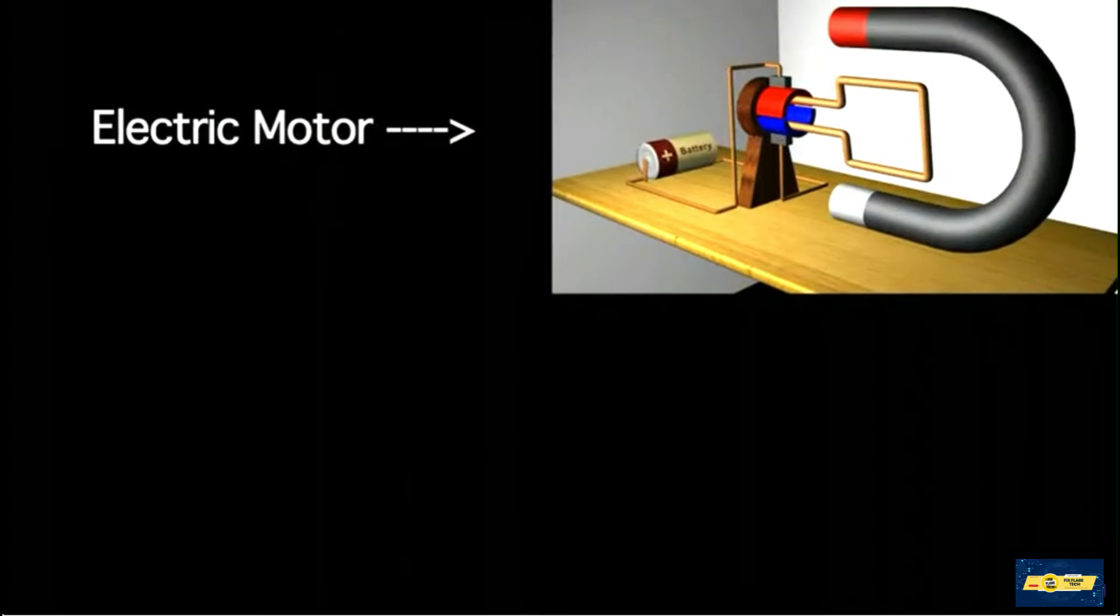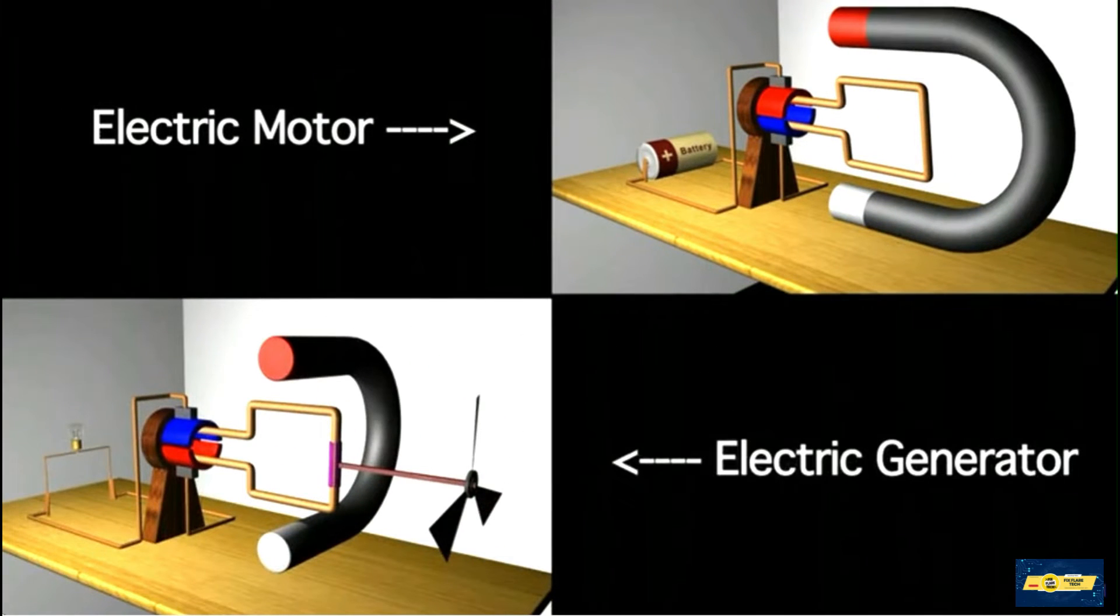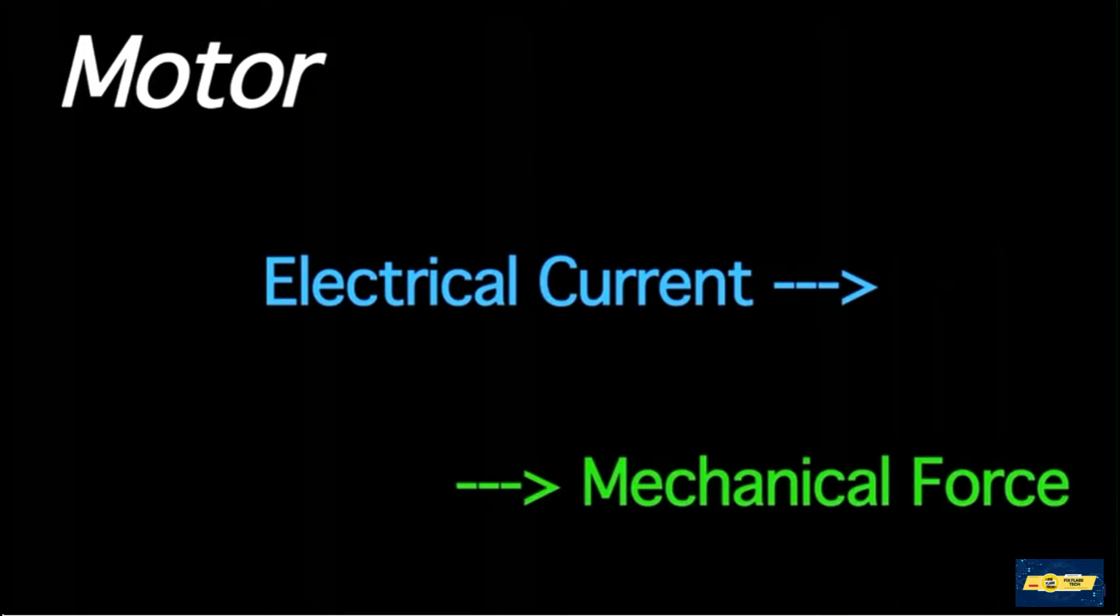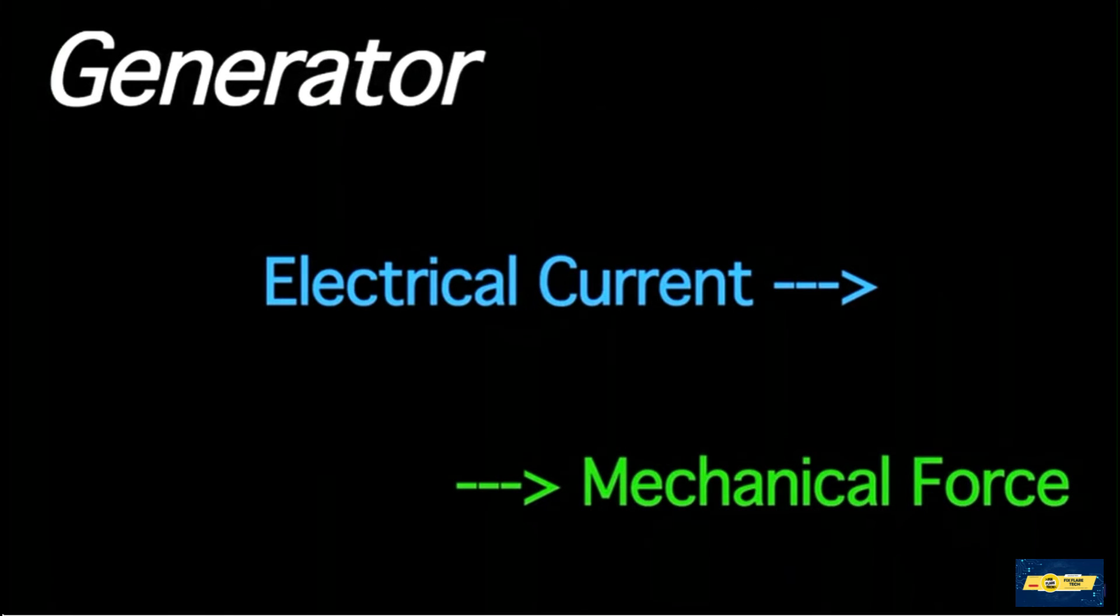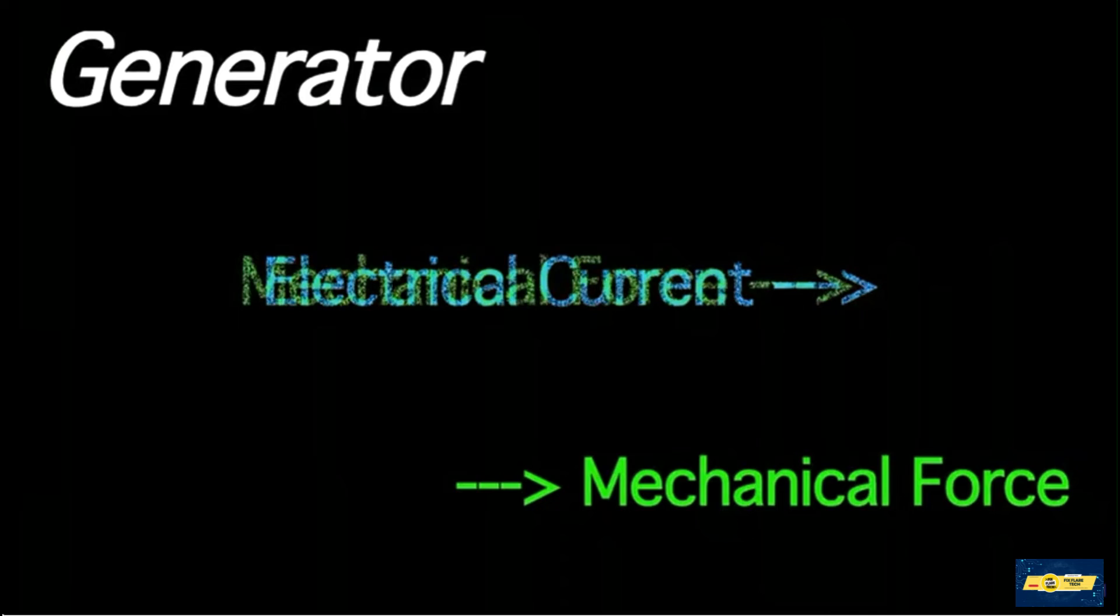The electric motor and the electric generator are related like two sides of a coin. In general, the task of an electric motor is to convert electrical current into mechanical force. On the other hand, an electrical generator converts mechanical force into electrical current.